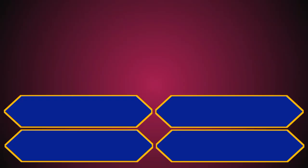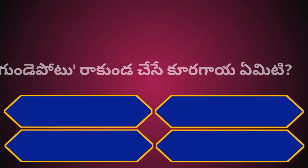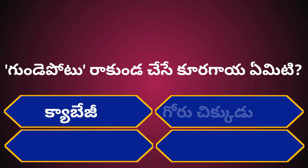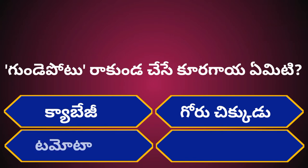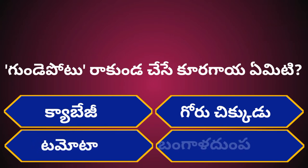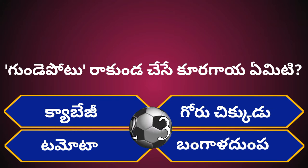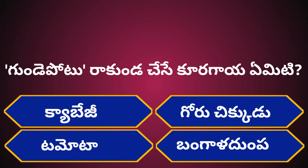Question No. 1. What do you want to do in the kitchen? Options: A. Cabbage, B. Gorchikku, C. Tomato, D. Bungal Dumpa. Your time starts now. Correct answer is A. Cabbage.